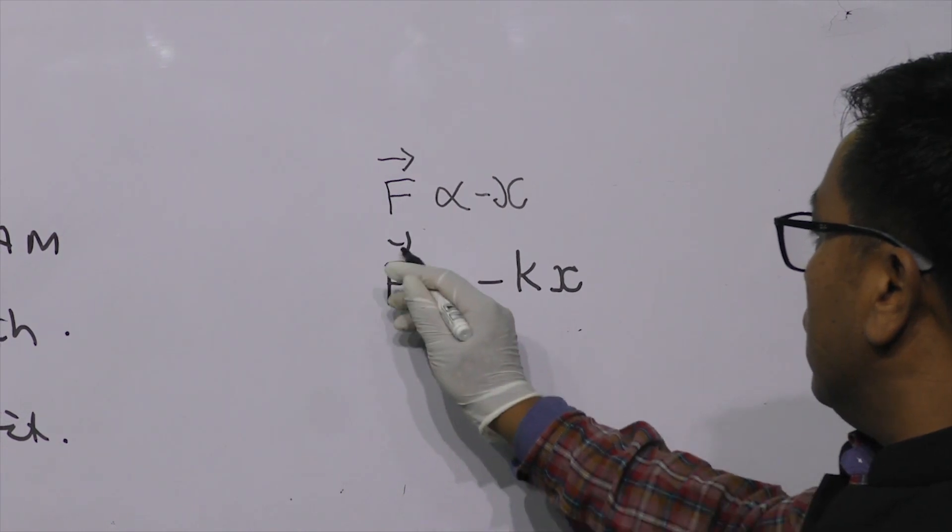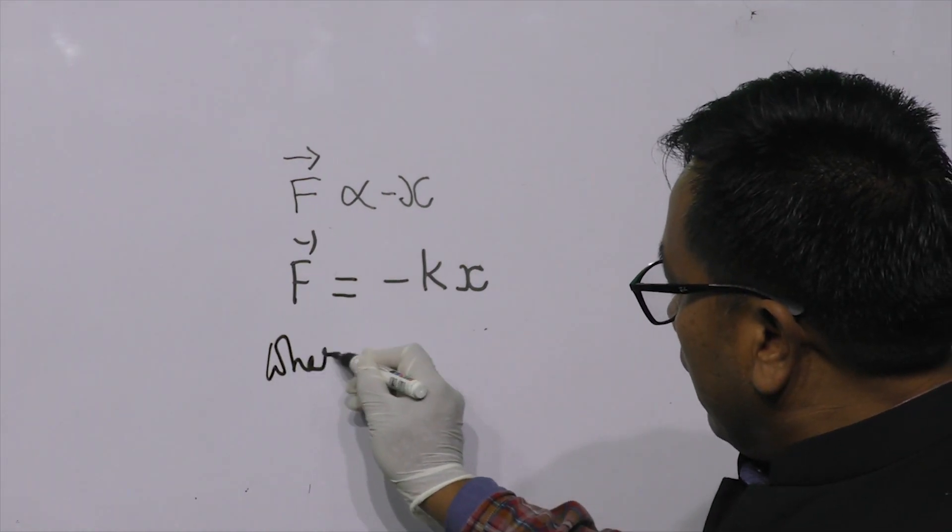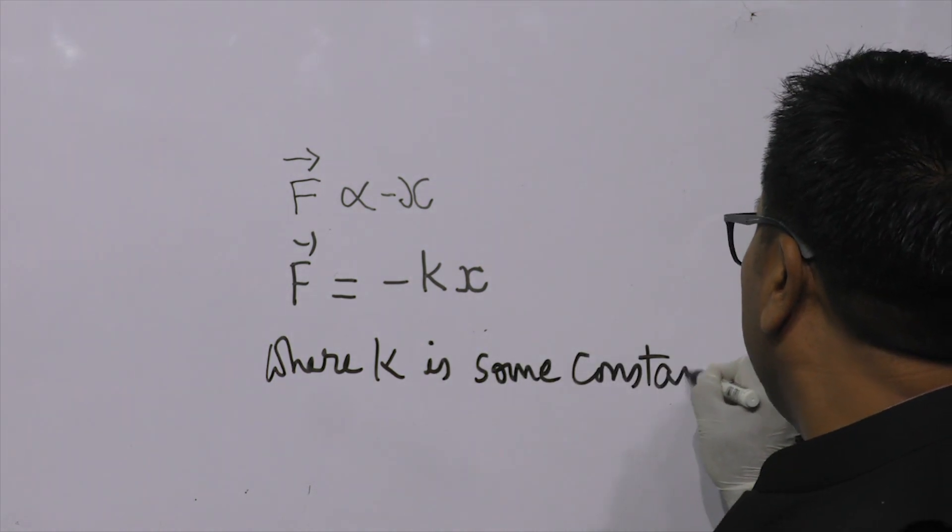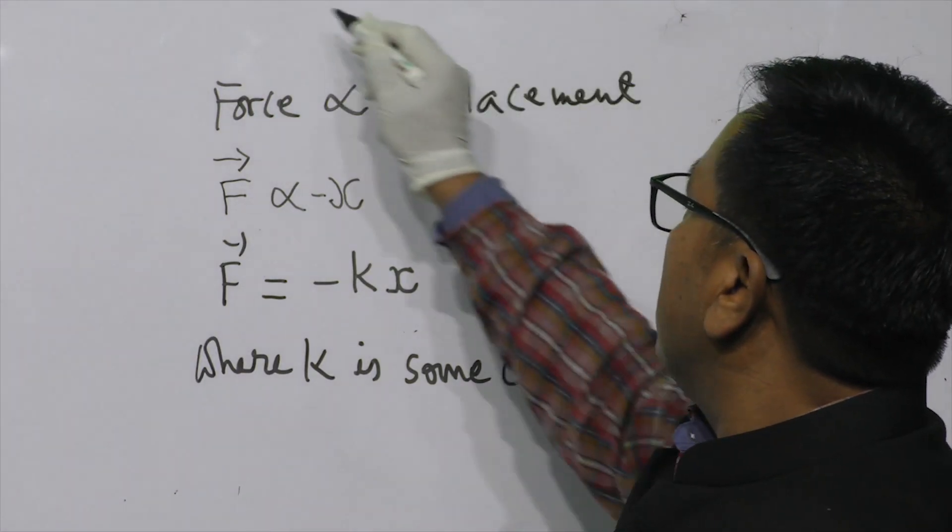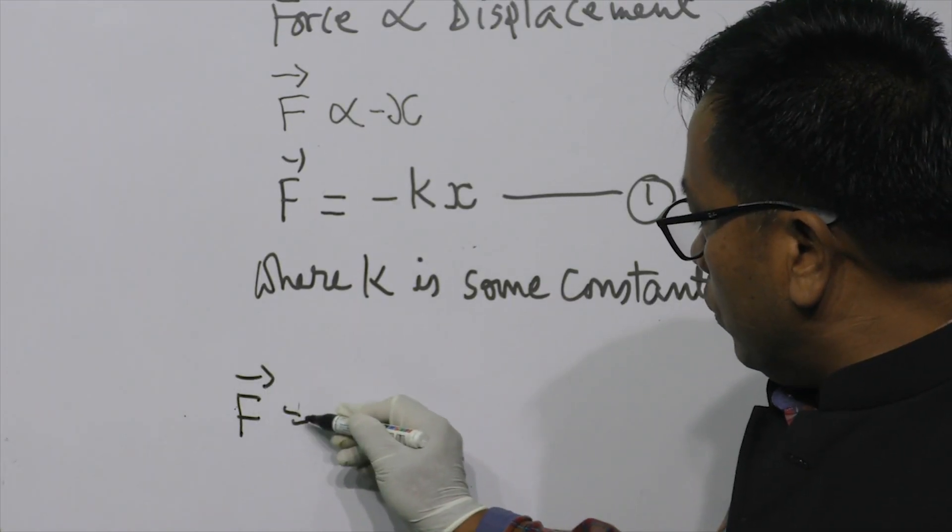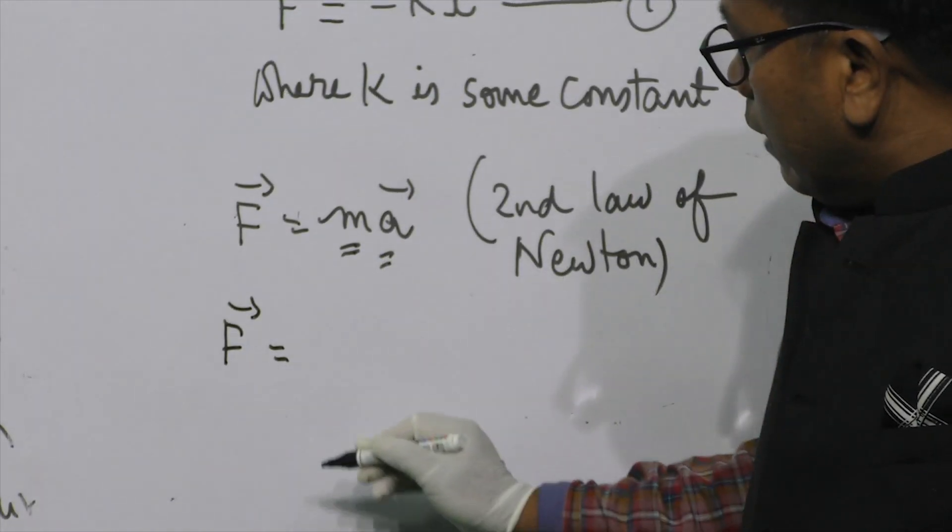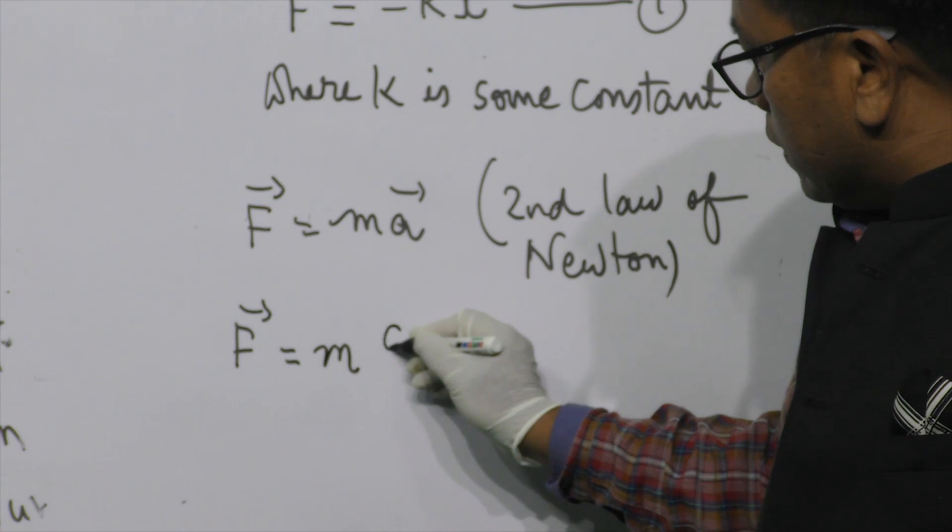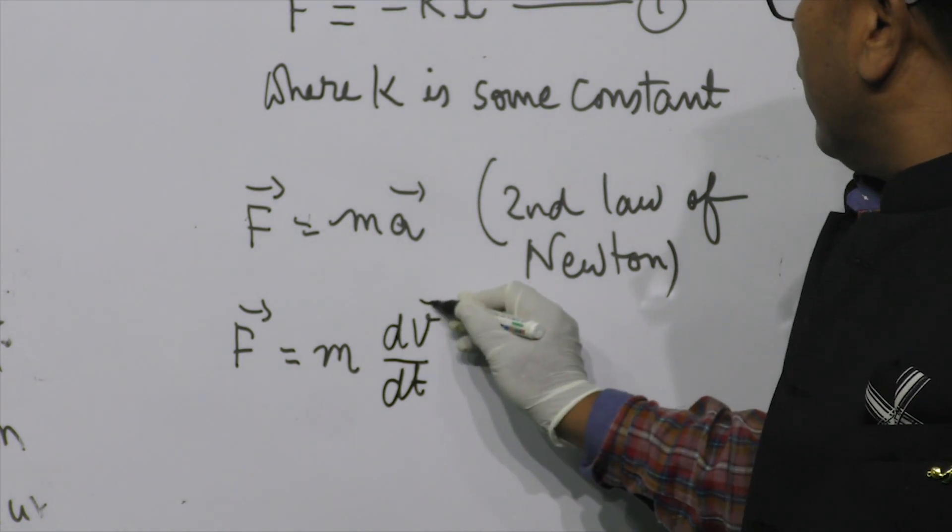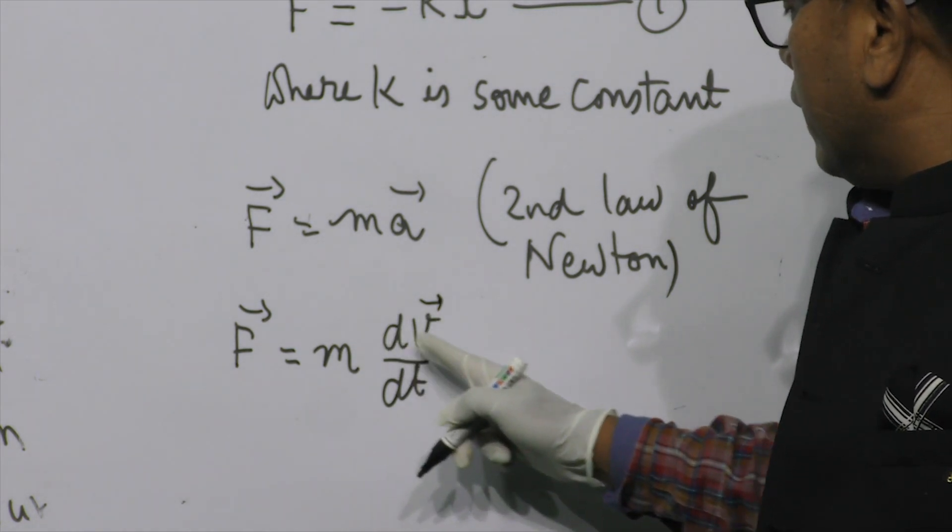Proportionality changing into equality, this will be equal to F equals the proportionality constant is K, where K is some constant for the time being. General condition for the simple harmonic motion. I can also write F equals mass into acceleration. This is the very famous formula of Newton's second law. F equals M into acceleration. As you see, this is dV by dt, dV is the change in the velocity. Acceleration as you see, acceleration is defined by the rate of change of velocity. So I can write here dV by dt.